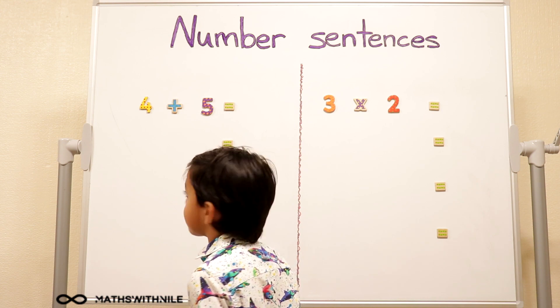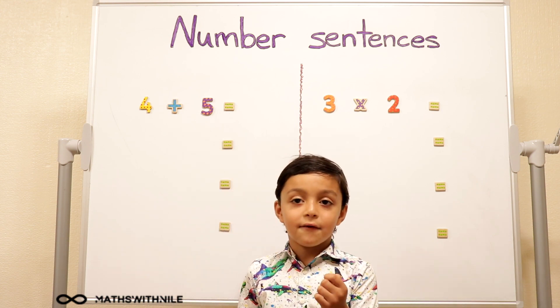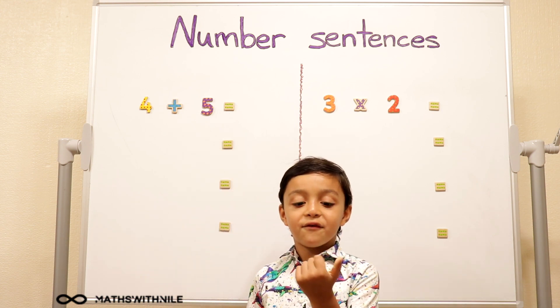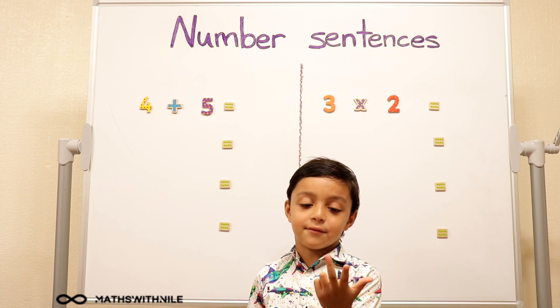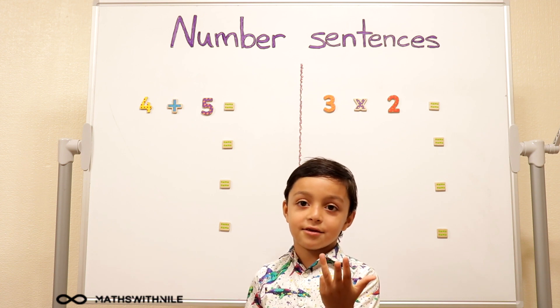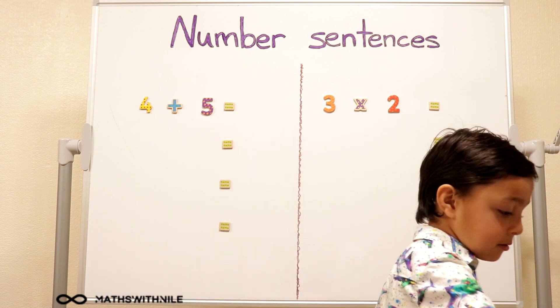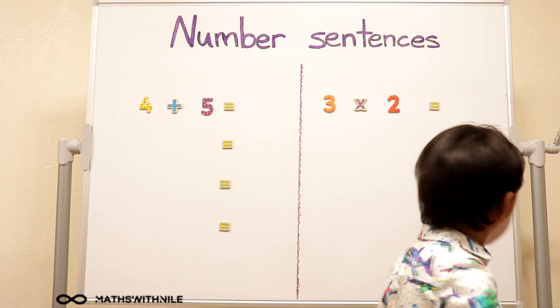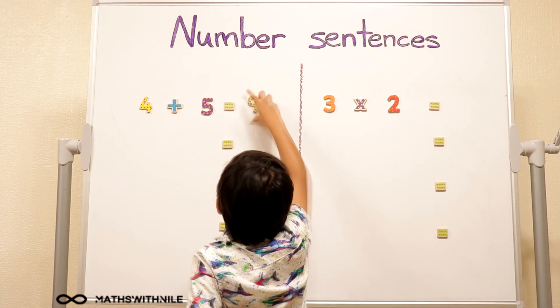Four plus five. Can you work out four plus five? Four, five, six, seven, eight, nine. Great. So grab a nine and put it by the answer. Nine. Good.